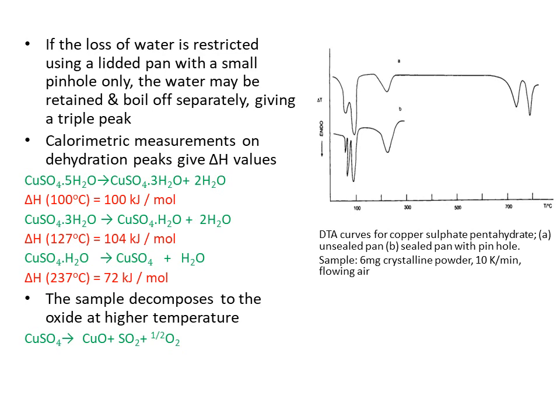Calorimetric measurements on the dehydration peaks give enthalpy change (ΔH) values. In the first event, two water molecules are removed and copper sulfate pentahydrate is converted to copper sulfate trihydrate at 100 degrees centigrade, with ΔH = 100 kJ/mol. In the second peak, two more water molecules are removed and copper sulfate trihydrate is converted to copper sulfate monohydrate at 127 degrees centigrade, with ΔH = 104 kJ/mol.